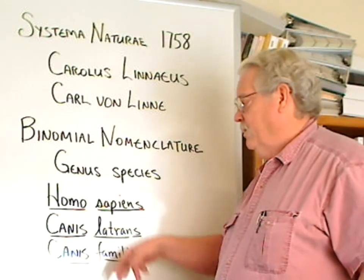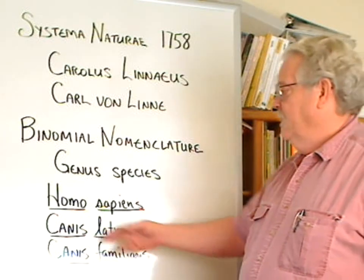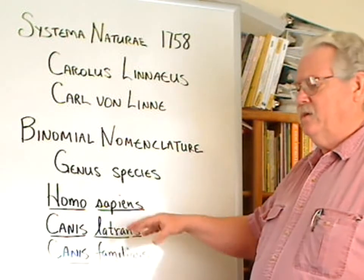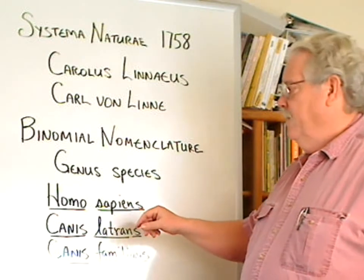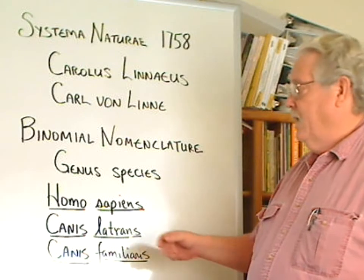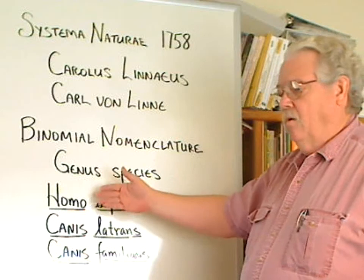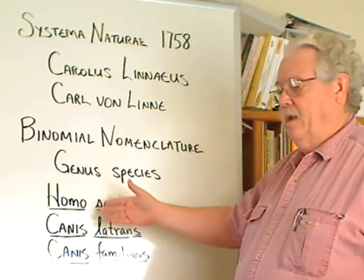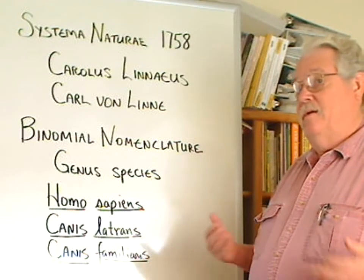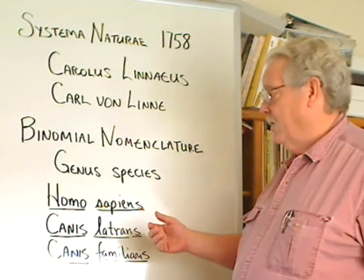Here are some examples of scientific names: Homo sapiens — that's us — Canis latrans, and Canis familiaris. There are several things to notice about these names. One is that the genus name is always capitalized. The reason for that is genera — the plural for genus — are always in the form of Latin nouns, and all Latin nouns are capitalized. This is a little different from English, where we capitalize names but not nouns.